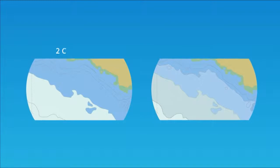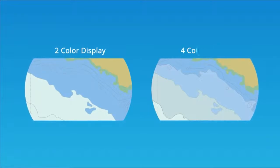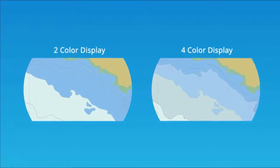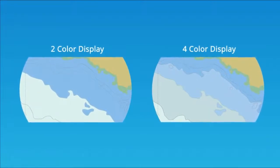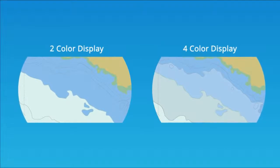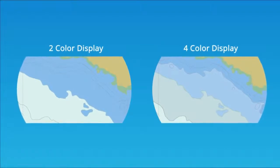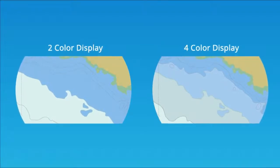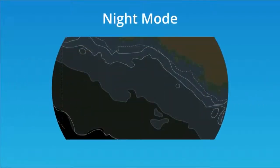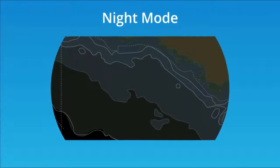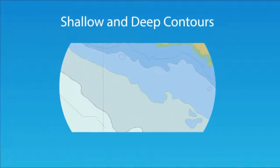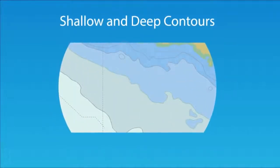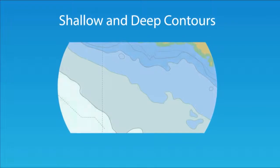Navigators may choose to display depth contours in two or four colors. It is most important that navigators verify their understanding of the chart display, as settings like night mode may lead to confusion. Additional depth information can be displayed by the shallow and deep contour settings.